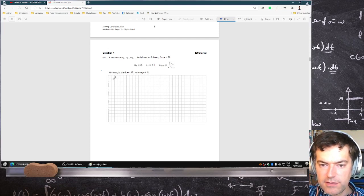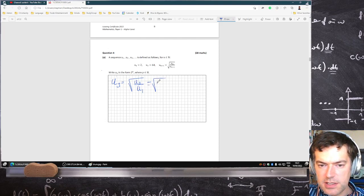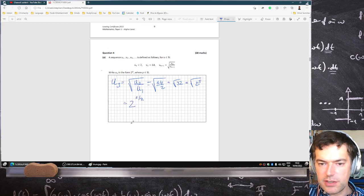Find u3. So u3 will be root u2 over u1, which would be root 64 over 2, which is root 32, which is root of 2 times 4 times 8, 2 power 5, which is 2 power 5 over 2.